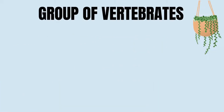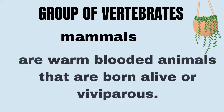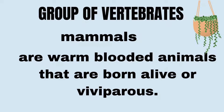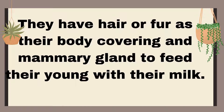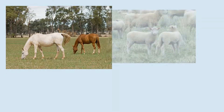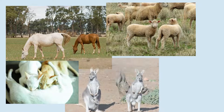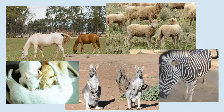Vertebrates can be grouped into five. The first group is mammals. These are warm-blooded animals that are born alive, or viviparous. They have fur or hair as their body covering and mammary glands to feed their young with milk. Examples of mammals are horses, sheep, cats, kangaroos, and zebras.